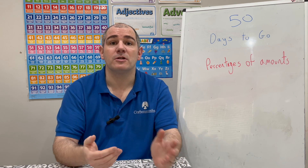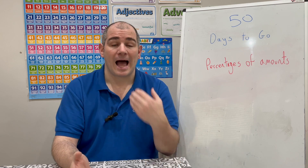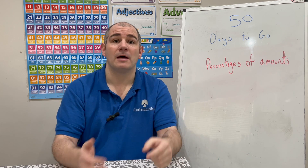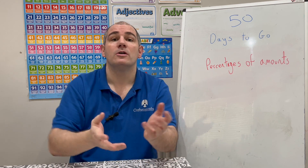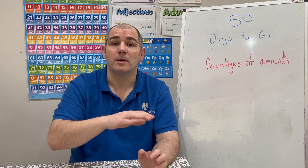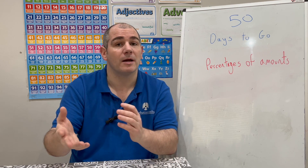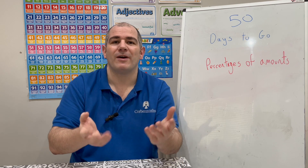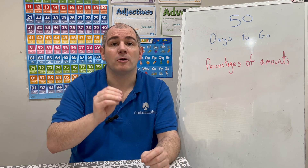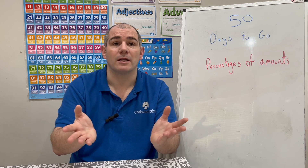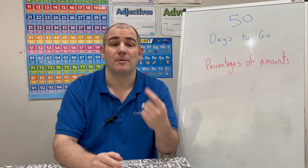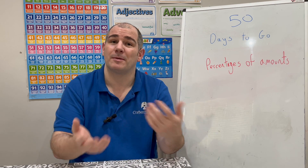For calculator questions, make sure you can find percentages on your calculator. I like to divide by 100 to get 1% and then multiply by the percentage I want — so for 17%, divide by 100 then multiply by 17. Some people prefer to use a multiplier and multiply by 0.17 instead. There's a link in the description to the video on multipliers.